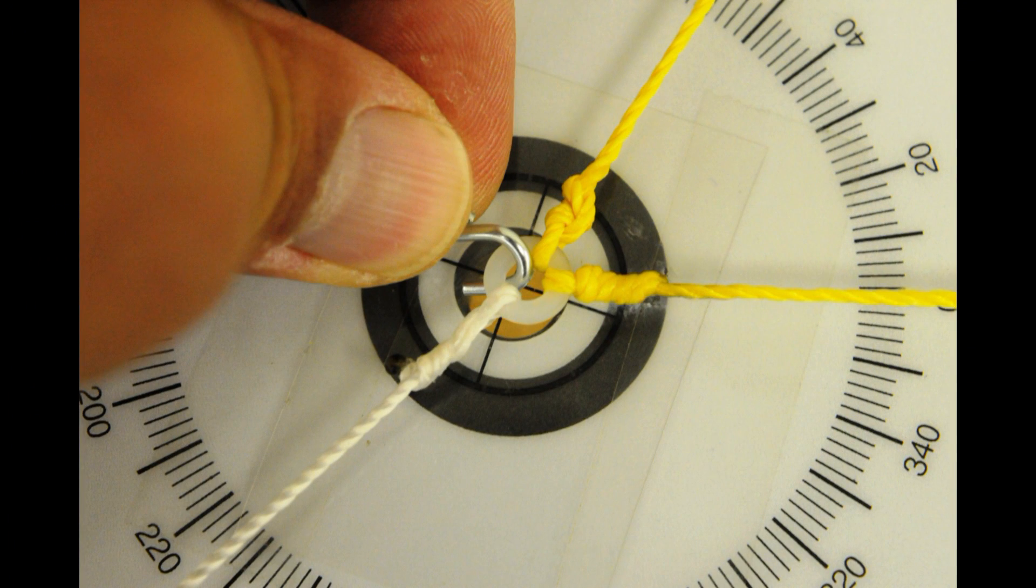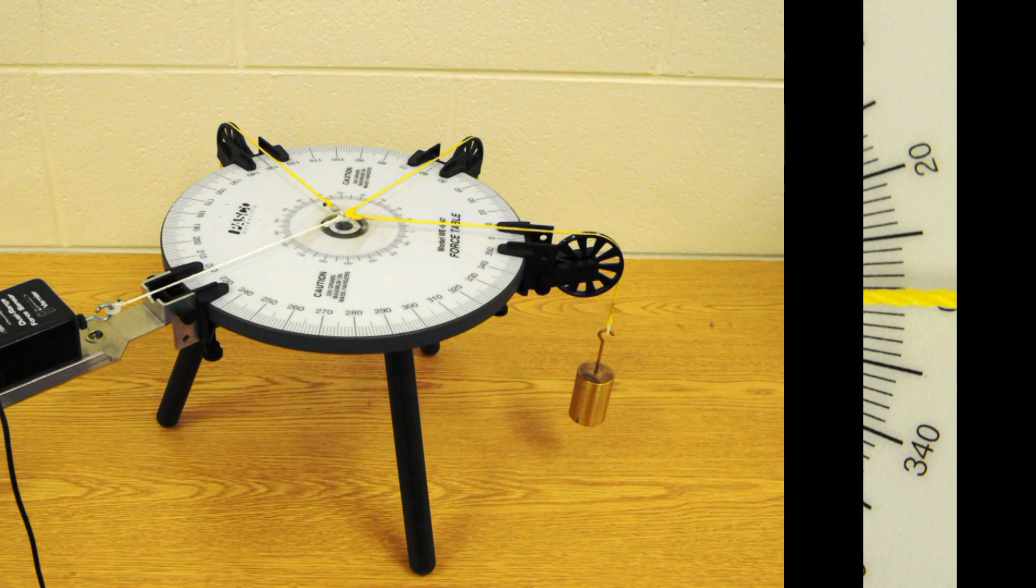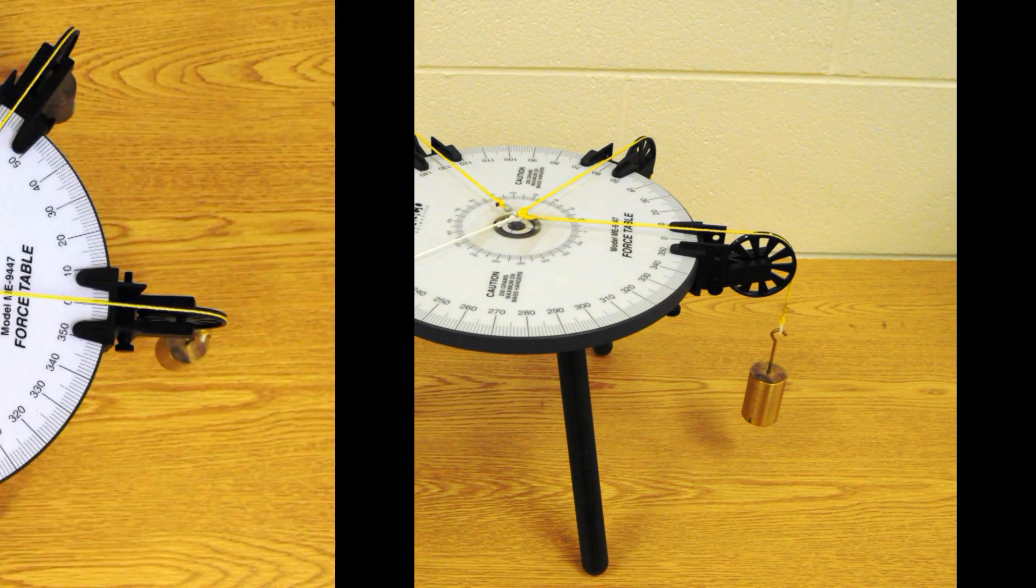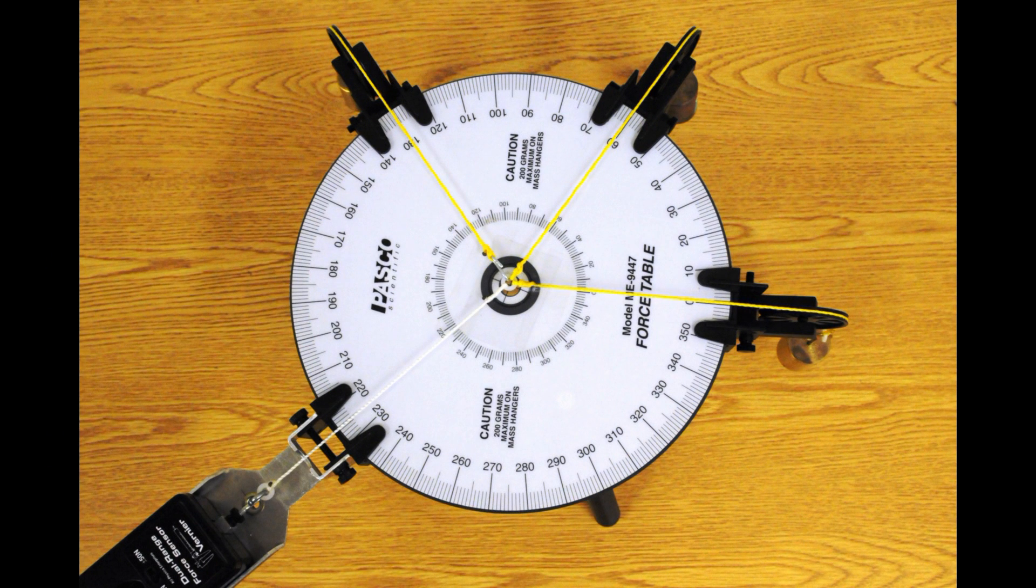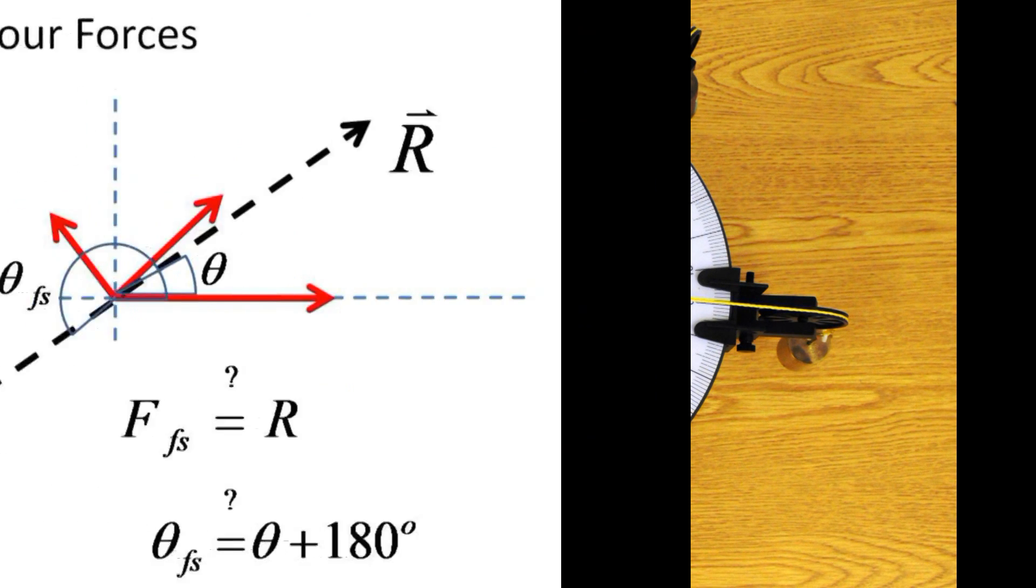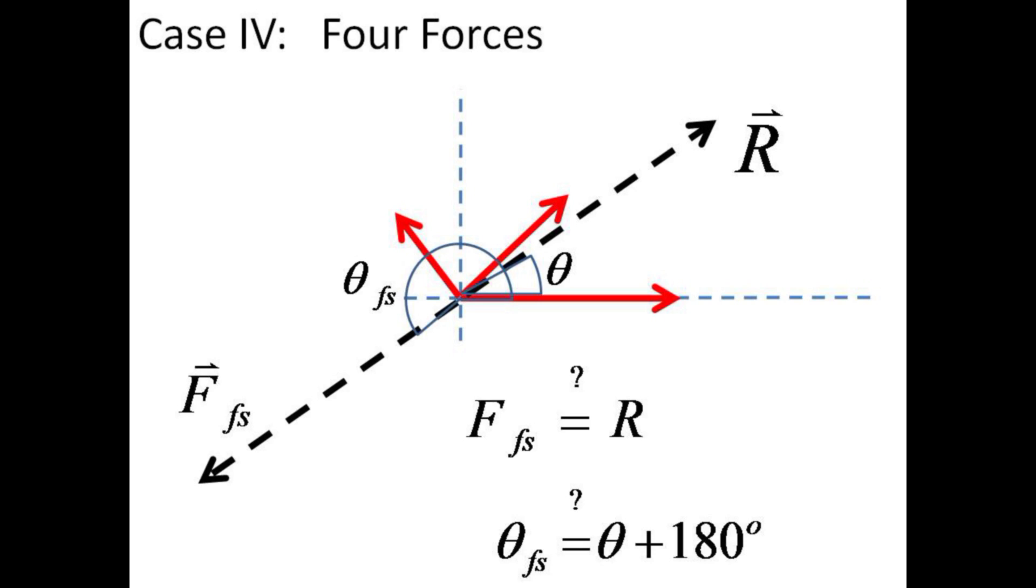The third force may be added to the mix using the hooked string slipped through the center ring. Here are the various views of the situation. In this case too, the force on the force sensor should be equal and opposite the predicted resultant force of vectors F1, F2, and F3.